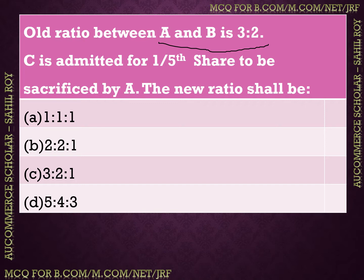The next question: Partners A and B had a profit sharing ratio of 3:2. A new partner C is admitted with a 1/5th share, and A will sacrifice his share to give C. The new profit sharing ratio shall be? Options: 1:1:1, 2:2:1, 3:2:1, or 5:4:3. The correct answer is option B: 2:2:1.